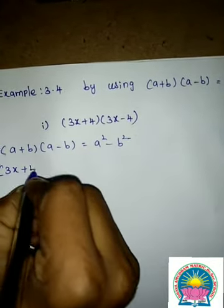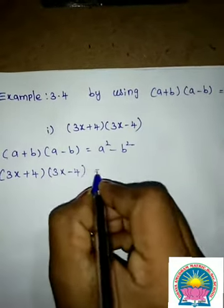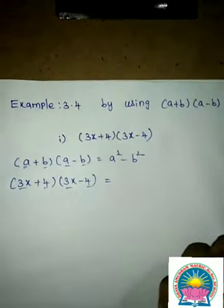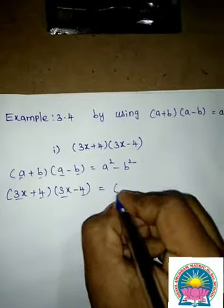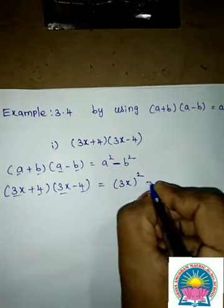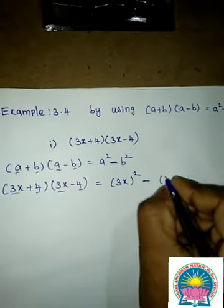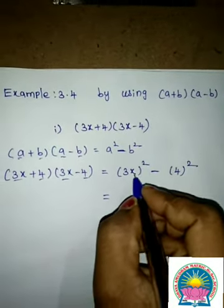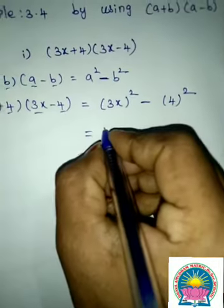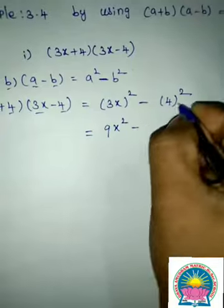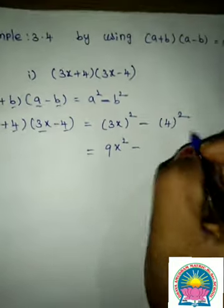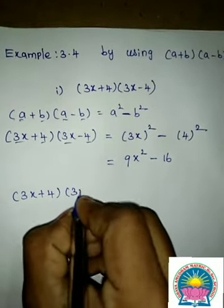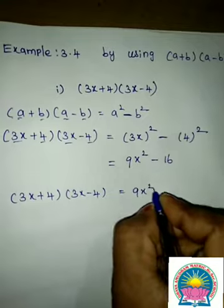The given question is (3x + 4)(3x - 4). Listen, children. Here, a = 3x and b = 4. So a² = (3x)² and b² = 4². Now, (3x)² = 9x² and 4² = 16. Therefore, (3x + 4)(3x - 4) = 9x² - 16. That's all, children.